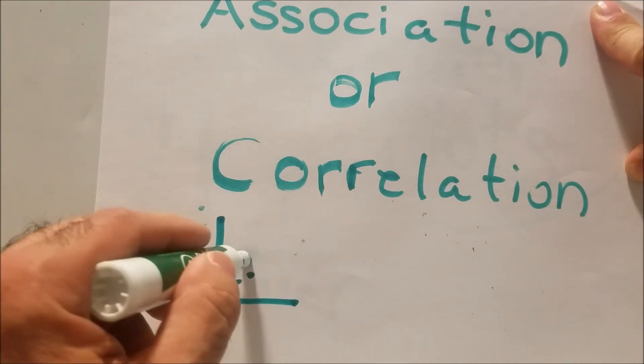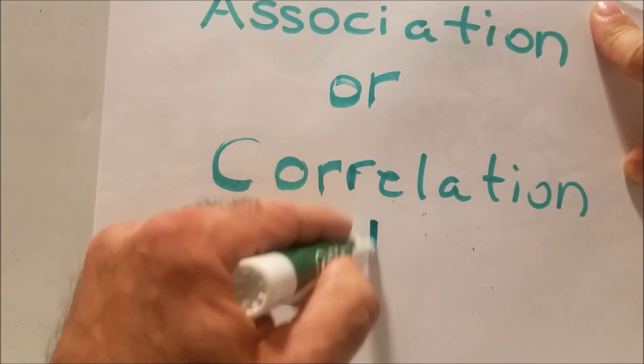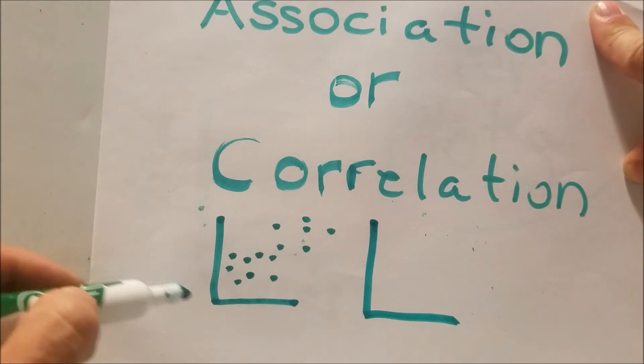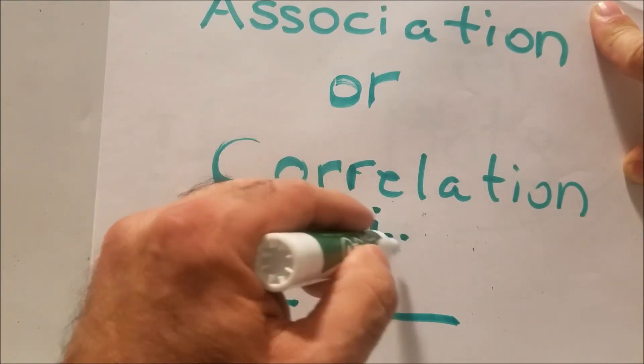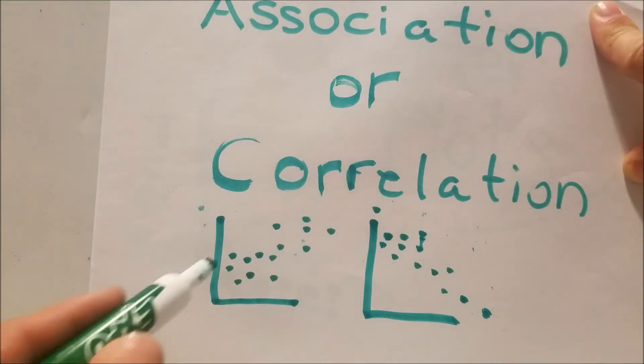I'll give an example here. If with our scatter plot is going up, we see a positive correlation. From left to right, it seems like it's going up. If we see left to right that it seems to be going down, that's negative, positive, negative.